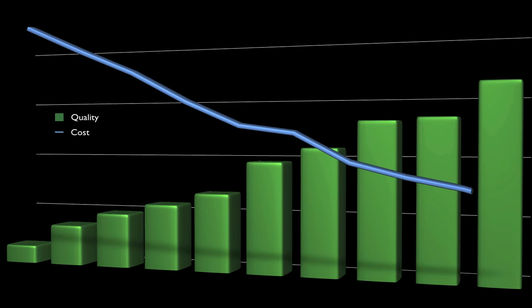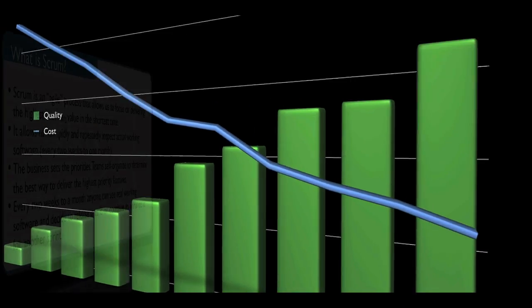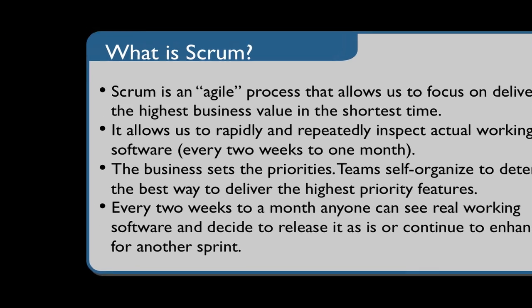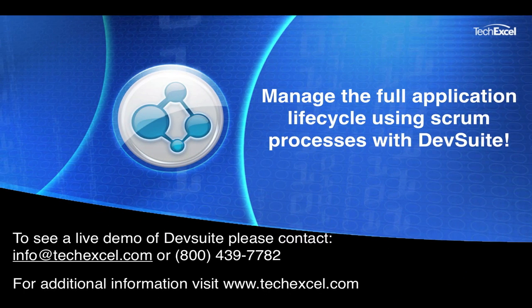The result is higher quality, lower cost software delivered faster. So in summary, Scrum is an agile development framework that allows us to focus on delivering the highest business value in the shortest time. The business sets the priorities and the teams organize and determine the best way to deliver the highest priority features. These features are delivered rapidly and repeatedly as demonstrable working software so that informed decisions can be made on the business value and release worthiness of the product.